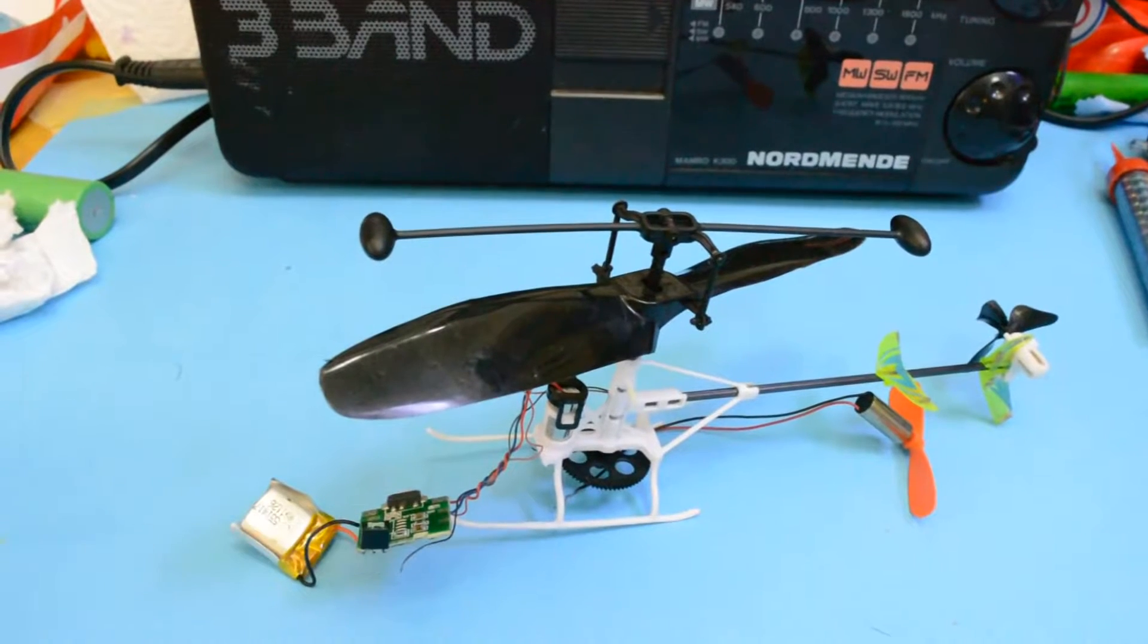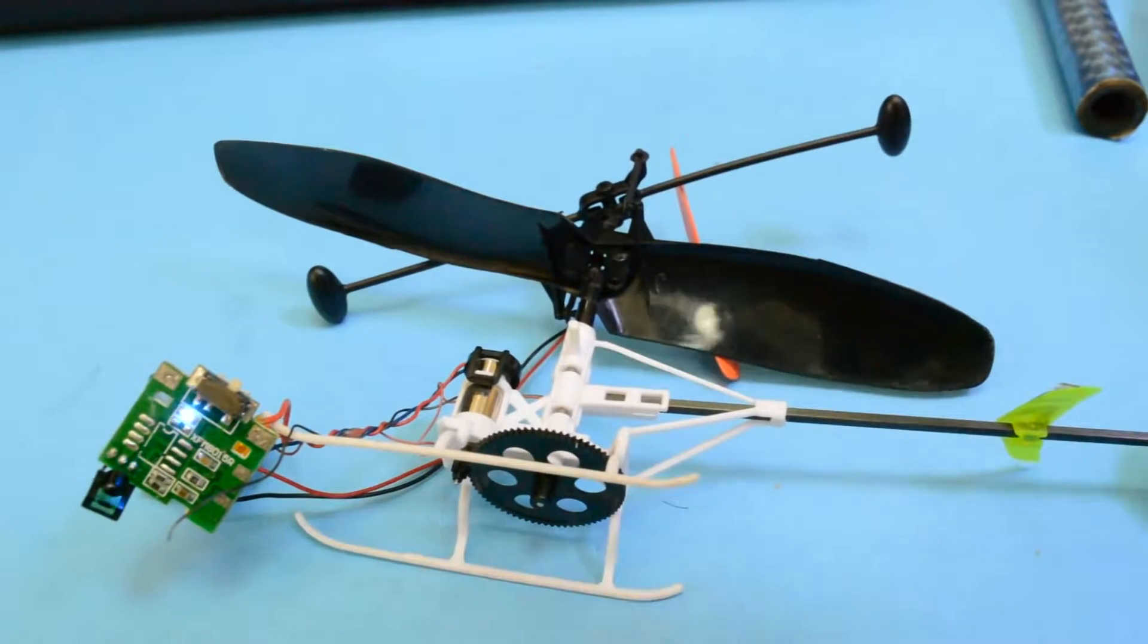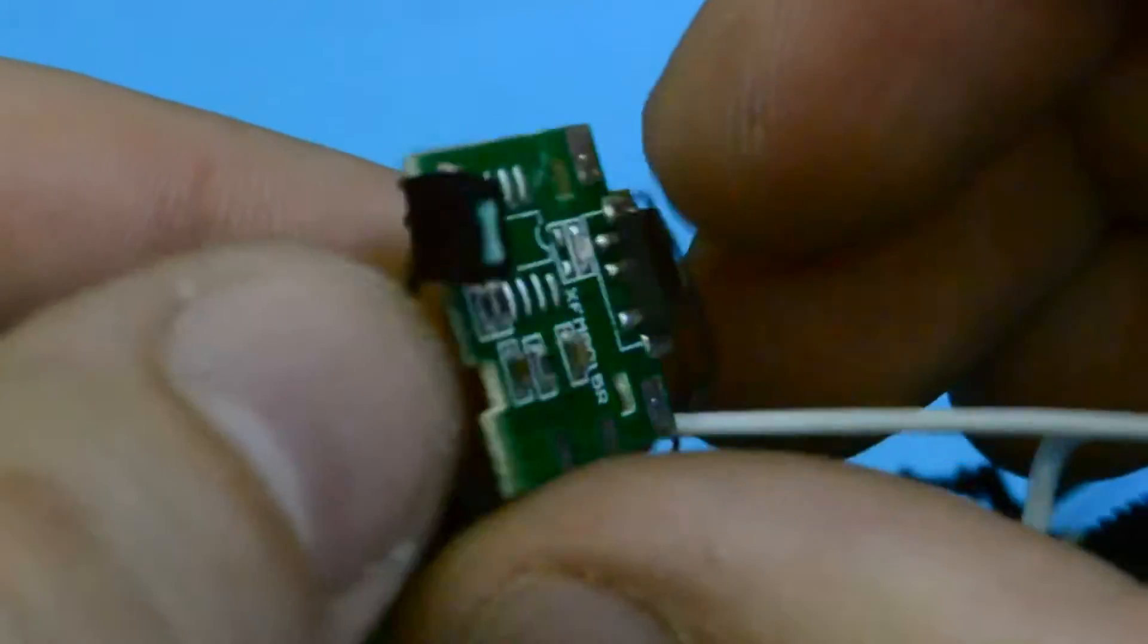Hello Hawk Tubers, from this old RC helicopter we're gonna use some parts like this receiver board with battery and two motors.